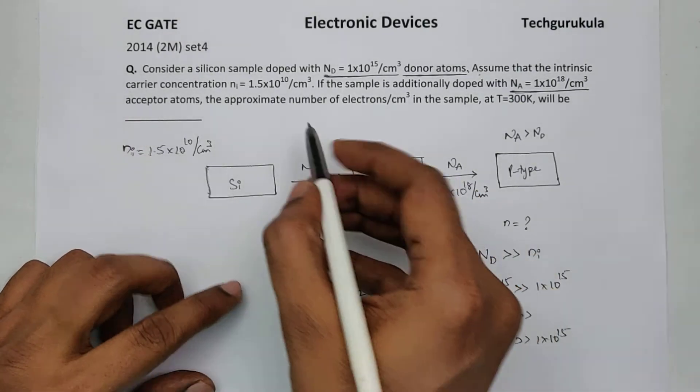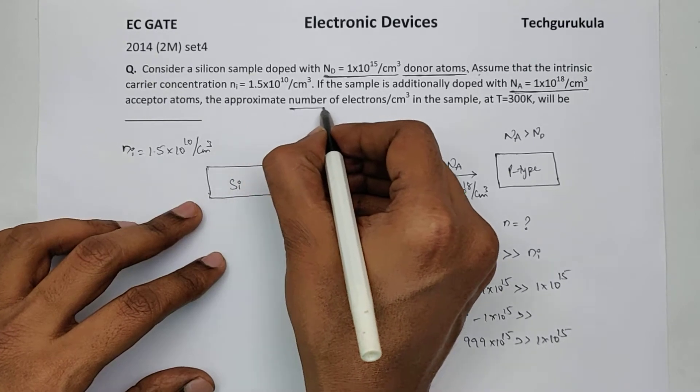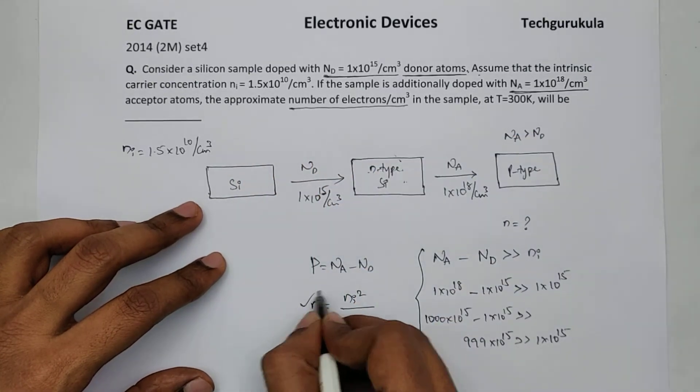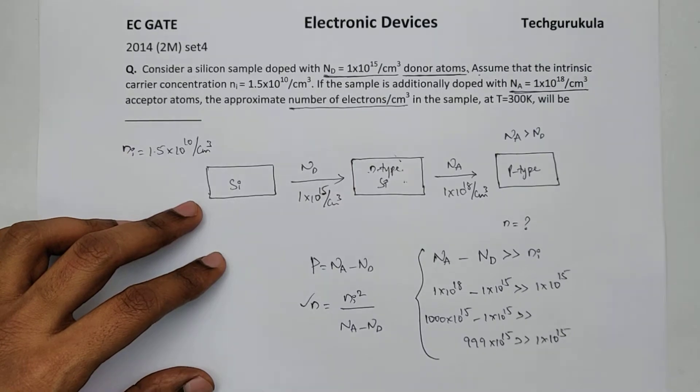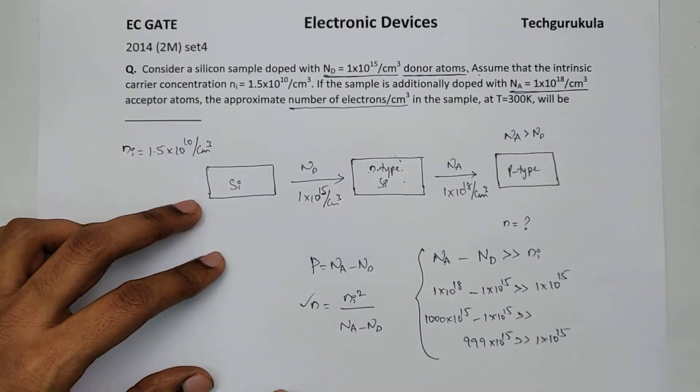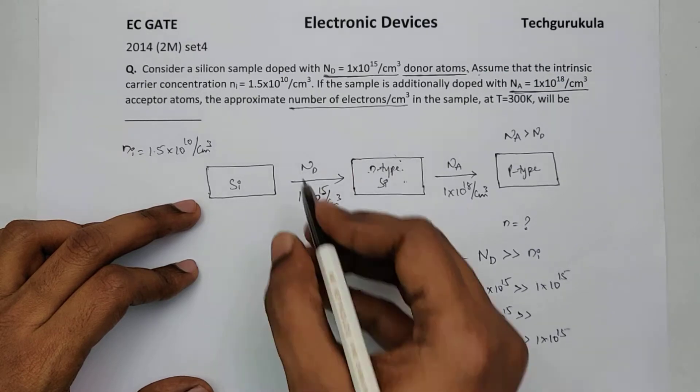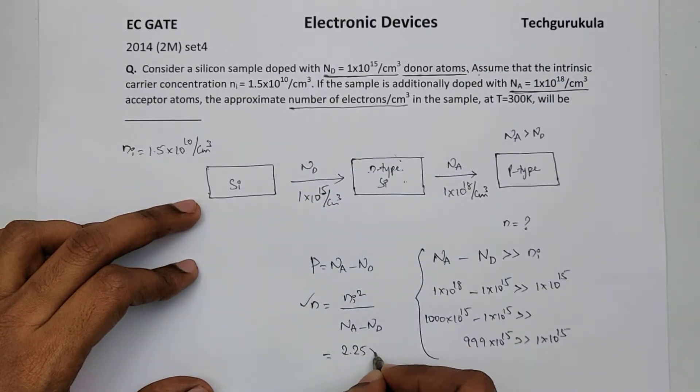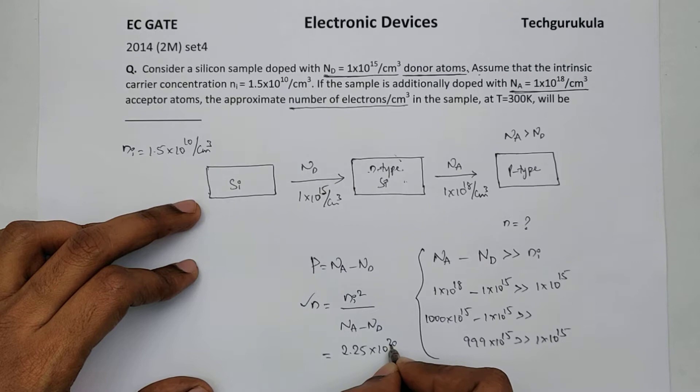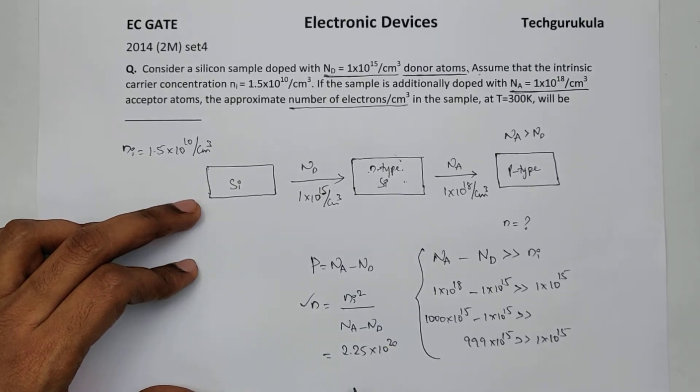Now what we are asked is the number of electrons per centimeter cube. So we need to find N which will be equal to Ni square, that is 1.5 square, which is 2.25 times 10 power 20 per centimeter cube, divided by Na minus Nd.